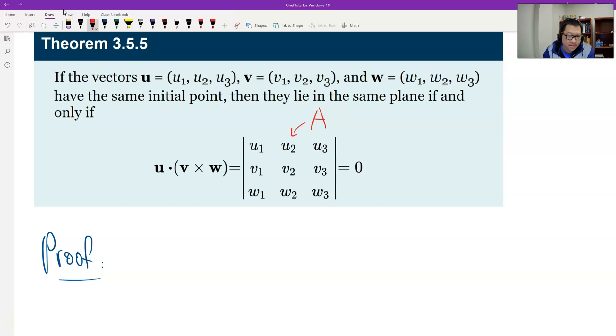At the previous theorem, remember, this theorem 3.5.4 gave us determinant of A equals to the volume of the parallelepiped. Of course, it's the absolute value. The absolute value of the determinant of A.